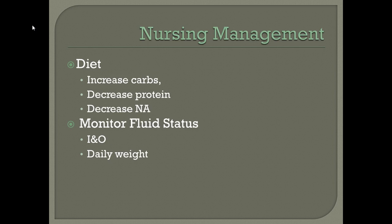Regarding diet, we increase the patient's carbohydrates and decrease their protein, as protein is very difficult for the kidneys to process — especially flesh or muscle protein such as red meat, chicken, or fish. We also decrease sodium intake and potentially decrease fluid intake. The only thing we want to increase is carbohydrates for patient energy. We monitor fluid status with intake and output and daily weights.